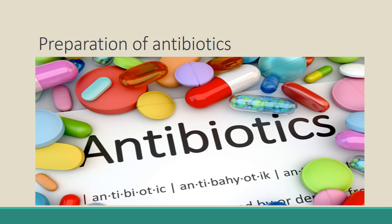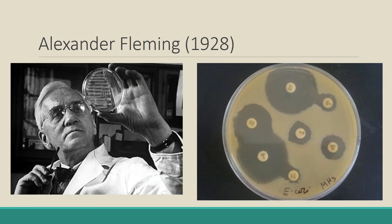Bacteria and fungi are used for the preparation of antibiotics. Anti means against, and biotics means living organisms. Antibiotics kill or stop the growth of microorganisms, particularly bacteria. A few antibiotics are also used against fungi. The discovery of antibiotics by Alexander Fleming in 1929 revolutionized the treatment of diseases. This is a picture of Alexander Fleming and his experiment with streptococcus, where the Penicillium fungus grew and in a round circle around it the streptococcus was not able to grow.